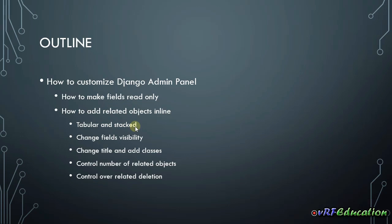These are two different classes we can inherit from to add related objects to the main object page. We can also do customizations for inline objects such as changing field visibility, changing the title of the group, adding classes, controlling the number of related objects, and controlling deletion. There's also one important customization I forgot to cover in the previous session: how to make fields read-only. I'll cover that first, then move on to managing related objects inline.